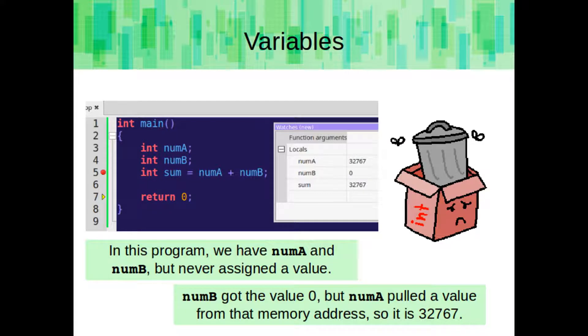In this program, we have variables numA and numB, but they're never assigned values. numB got the value 0, but numA pulled a value from that memory address, so it is 32767. It's not always going to be this value — it's just what was in that memory address at that time.